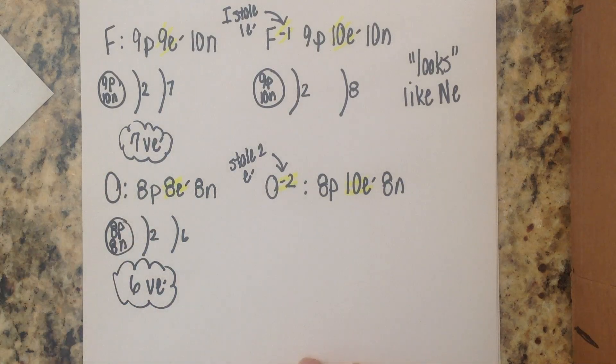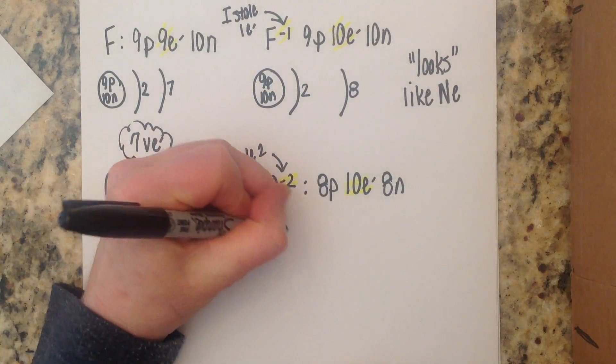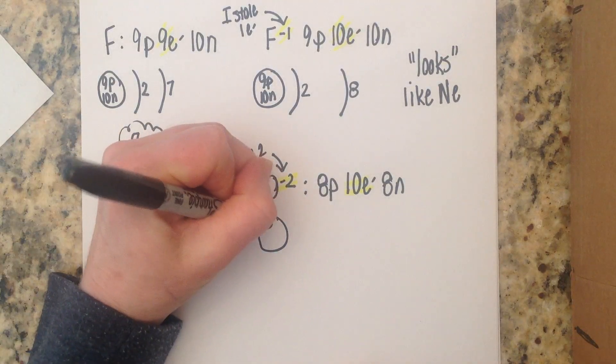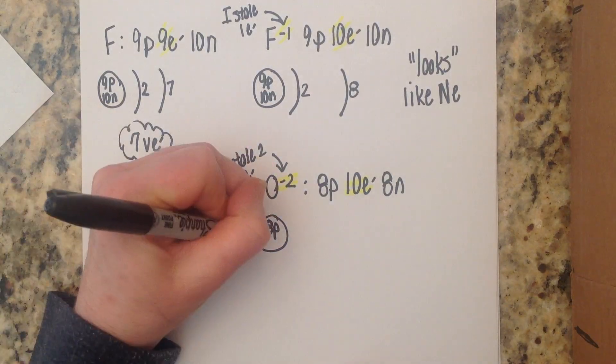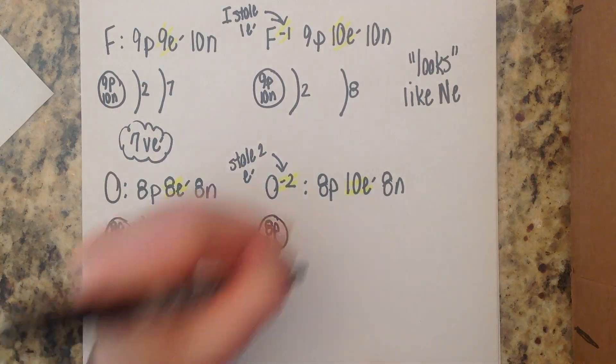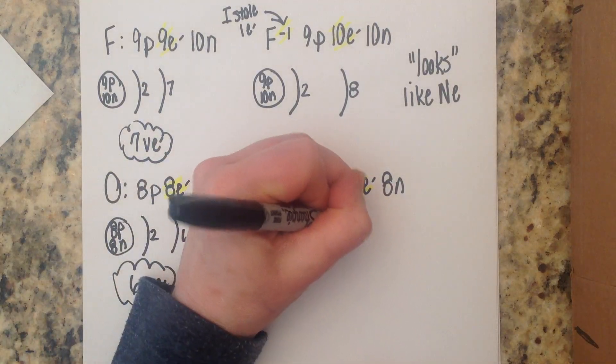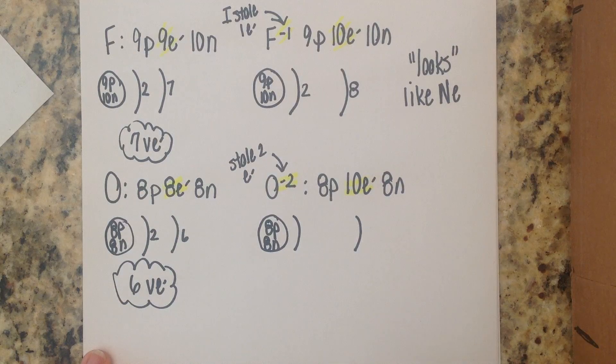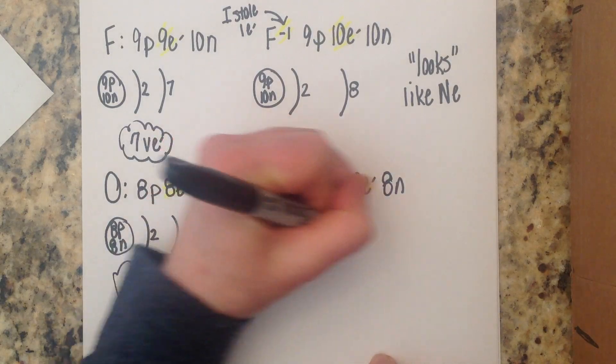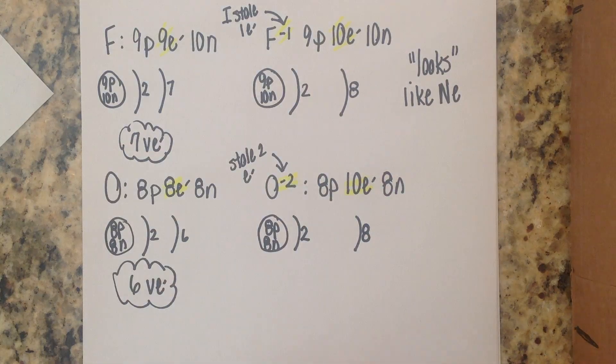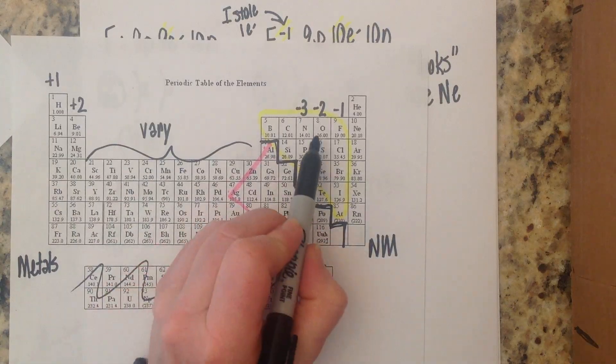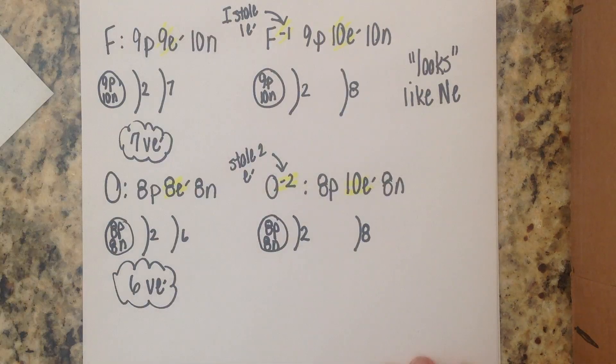And now when we compare that to oxide remember we changed the ending to ide oxide has eight protons in the nucleus eight neutrons we still have two levels of electrons but remember because we're adding those two extra electrons to this outer shell we're going to have to make room so we're going to have two and eight and oxygen also in gaining these two electrons looks like neon.